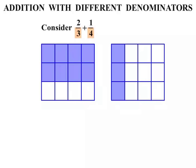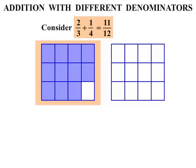Now because they are broken up into twelfths, we are dealing with twelfths. Let's move each piece across and add them together. We can see that once we have added them, we get eleven twelfths. We have eleven pieces out of twelve shaded, so eleven twelfths is our answer.